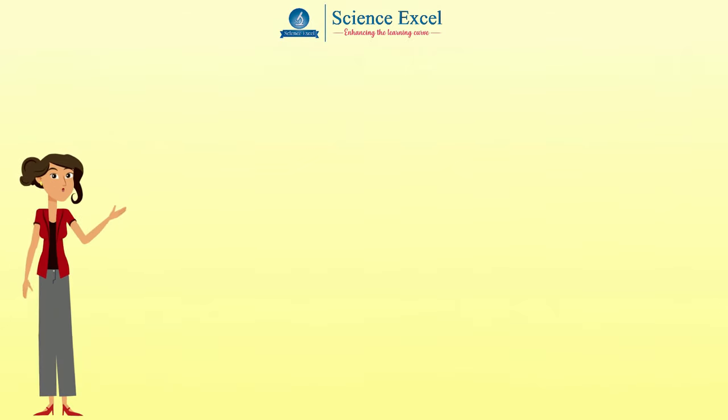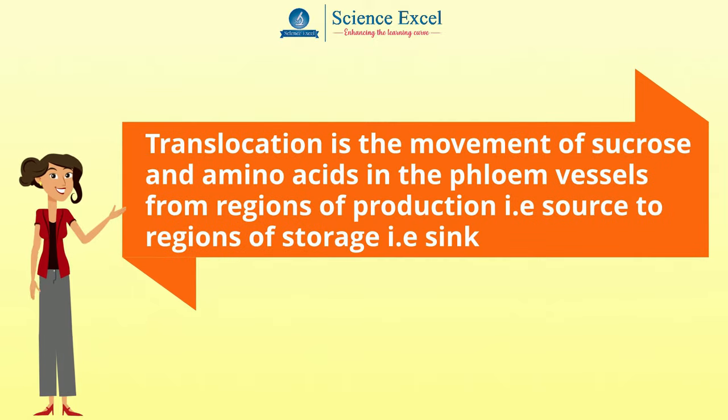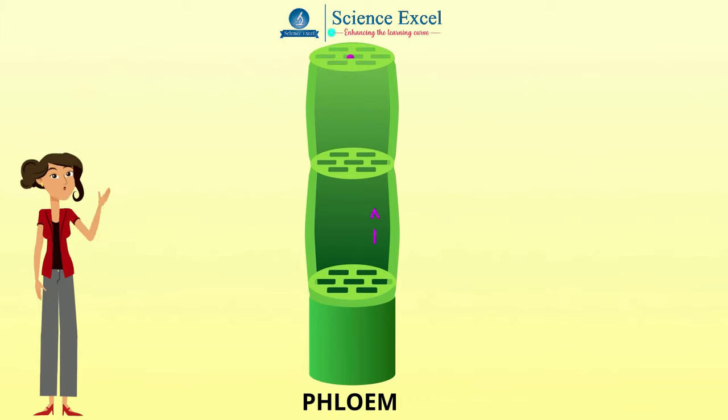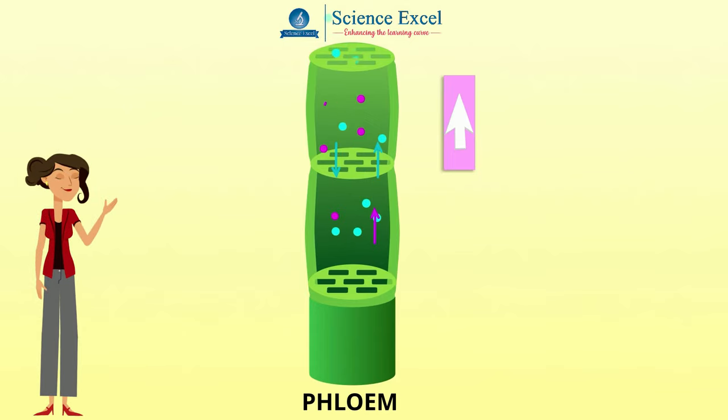What is translocation? Translocation is the movement of sucrose and amino acids in the phloem vessels from regions of production, i.e. source, to regions of storage, i.e. sink. Translocation takes place through the phloem in both directions, i.e. upward and downward.